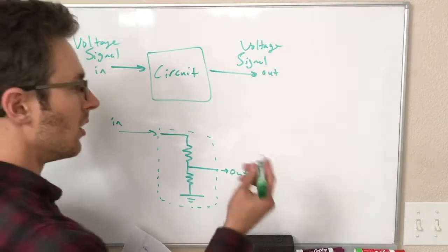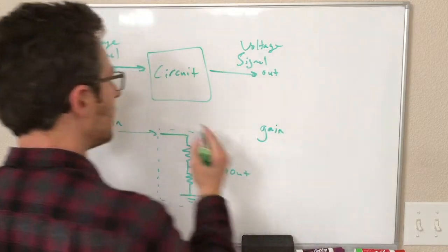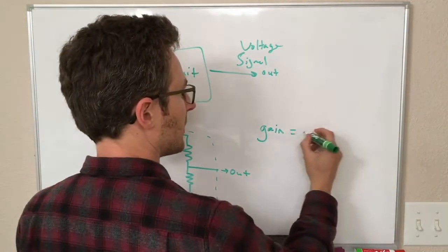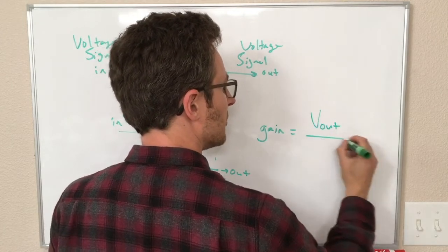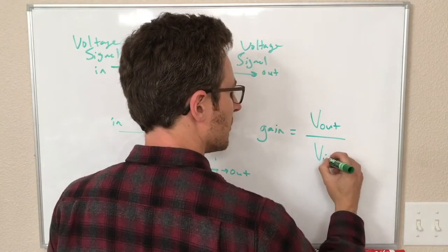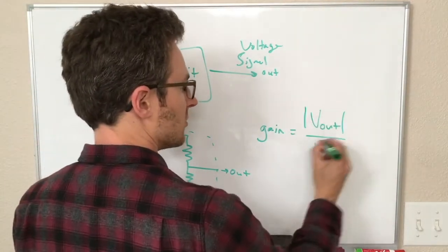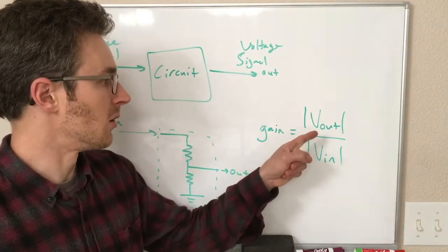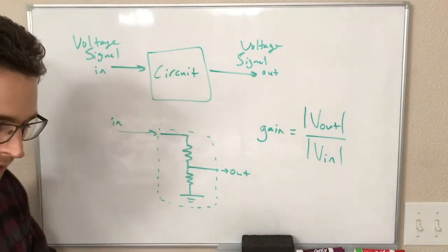Before we get further, I also want to remind you of gain. Gain is a way of measuring what a circuit does to an input voltage. In particular, the gain is the ratio of the output voltage to the input voltage. Since we're kind of used to these maybe being complex values, we will just put absolute value signs on them. The gain is a real number that is the ratio of the magnitude of the voltage out to the magnitude of the voltage in.